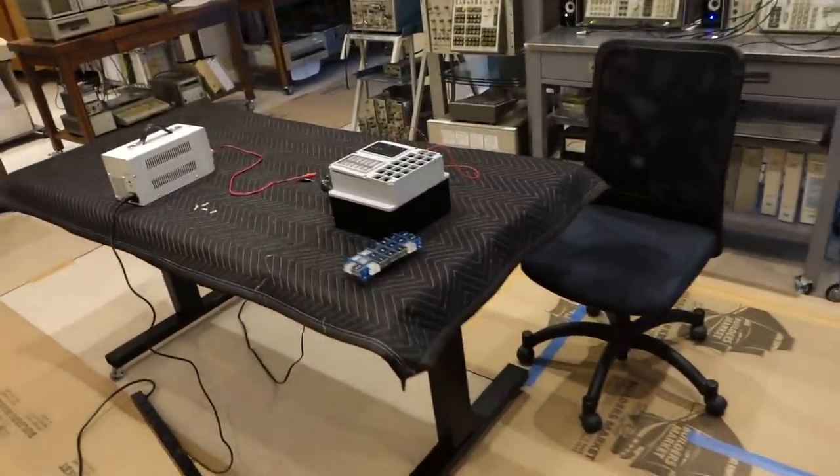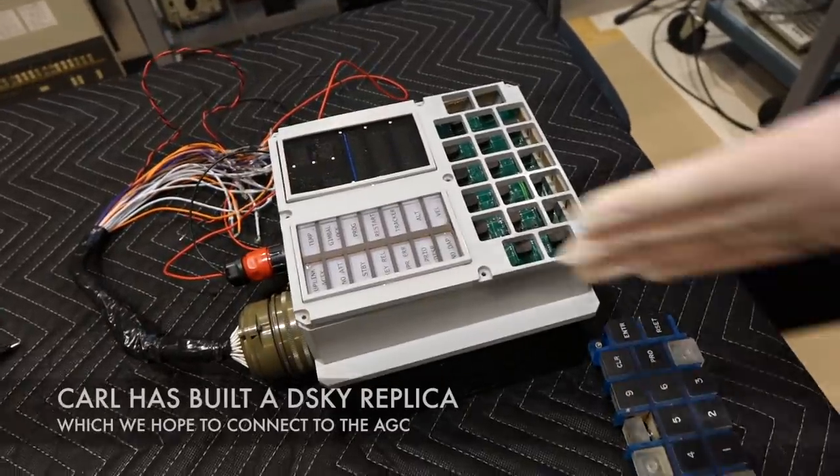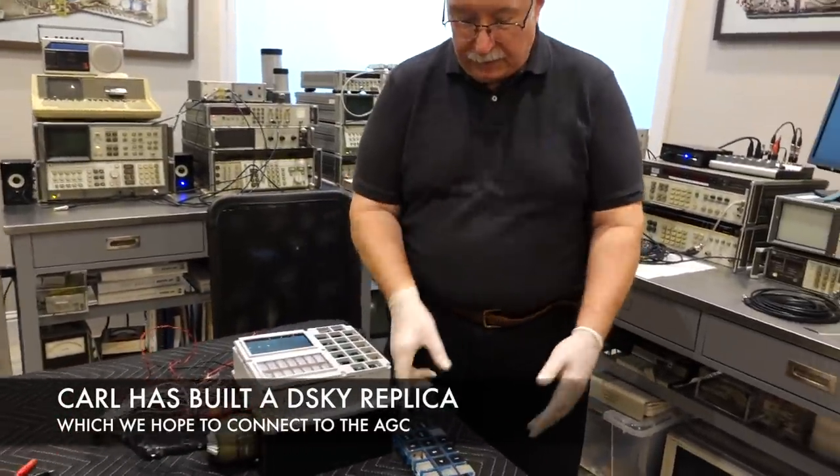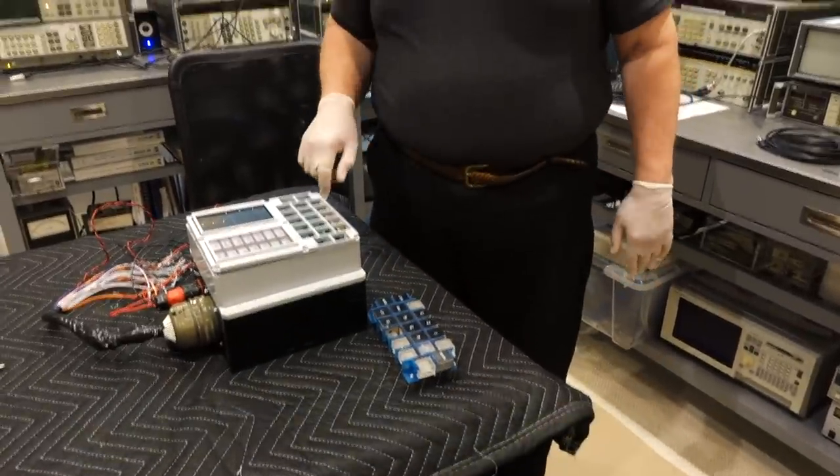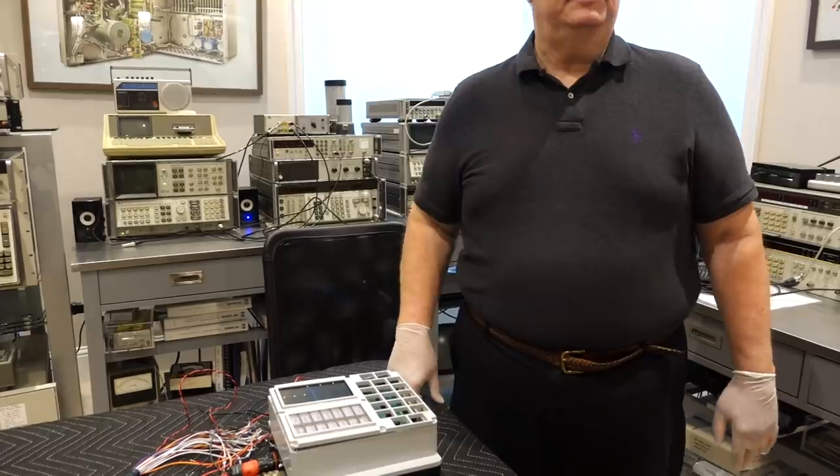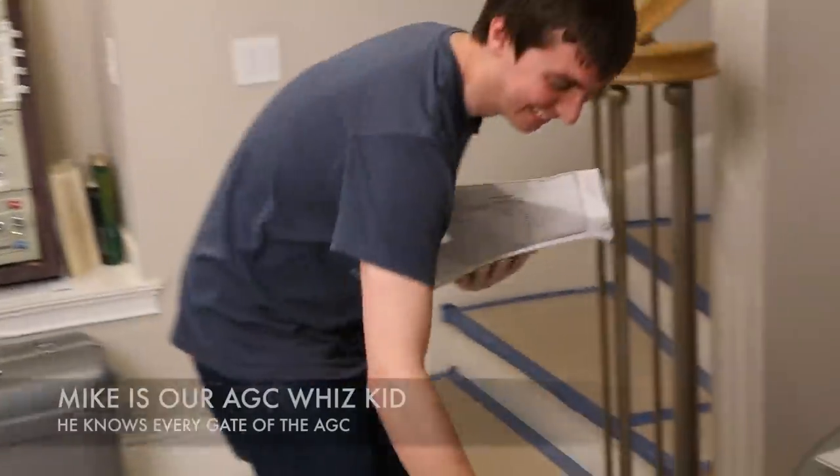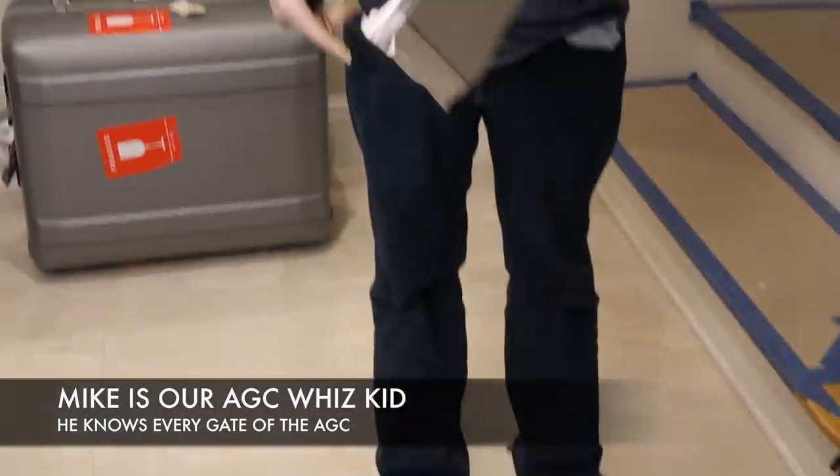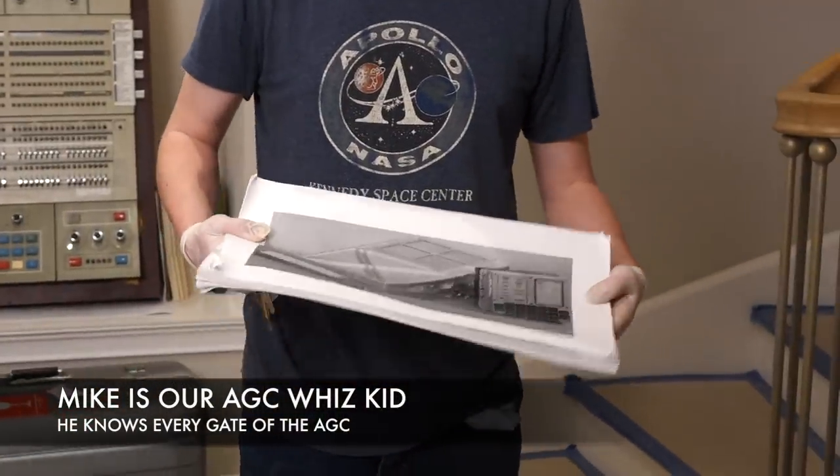Carl has set up here the display and keyboard replica that the astronauts used. The keyboard needs a little work, but basically they would punch in things and see glowing numbers here. Mike is setting up shop over here with the schematics in hand.